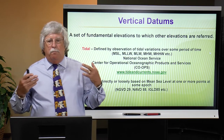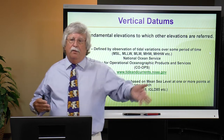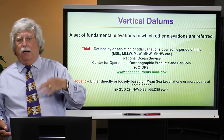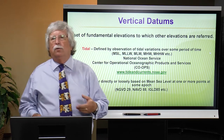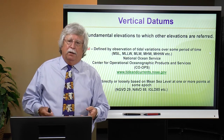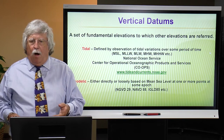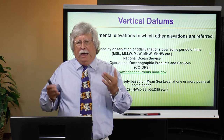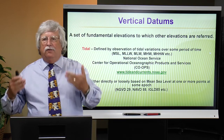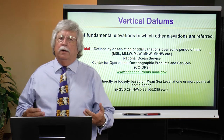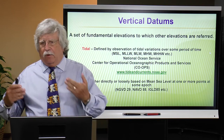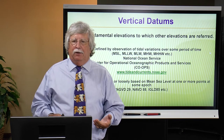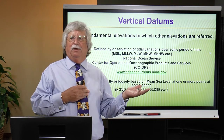Mean sea level, like mean lower low water, mean low water, mean high water, and mean higher high water — just a few of the defined tidal datums — are very specific and very localized. A tidal datum only exists at or near the shoreline. For example, you cannot have mean sea level in Des Moines, Iowa. You have to be relatively close, typically within a couple of miles of the shoreline.